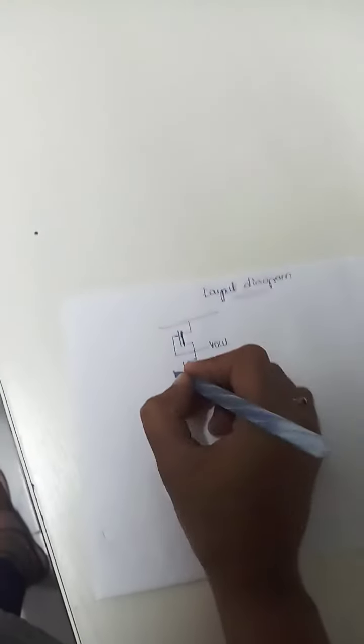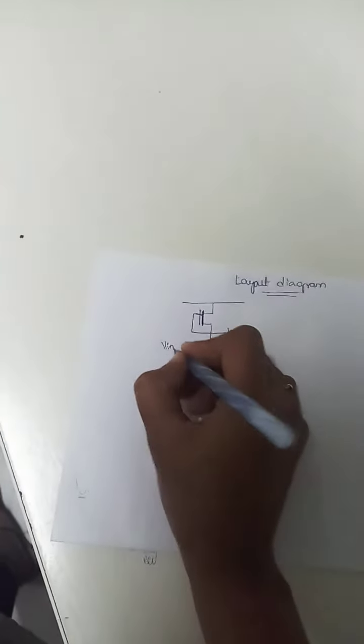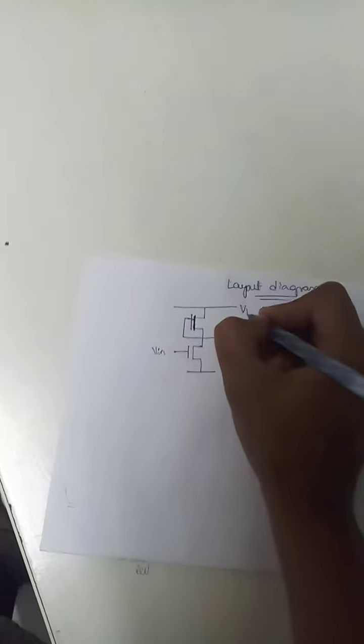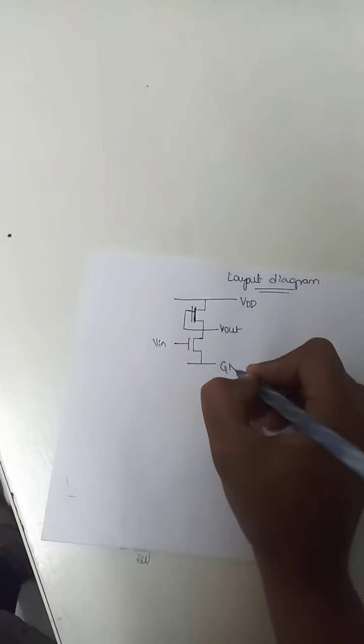And for enhancement mode, you will be giving an input here. This is Vdd and this is Ground. So this is the normal stick diagram as you all know.